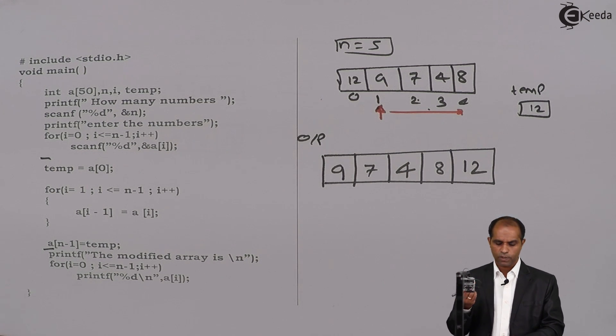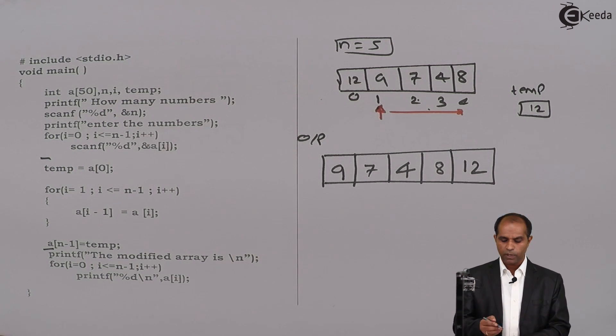So finally, display the modified array as for i equals 0, i less than equal to n minus 1, i plus plus, printf percentage d slash, comma a[i].